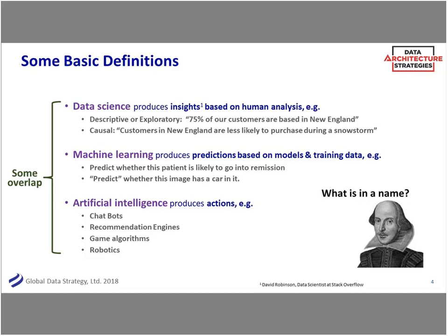I would put data science in a different category — it's more exploratory analysis, like: 75% of our customers are based in New England and are less likely to purchase during a snowstorm. Machine learning is about actually learning and building predictive models on training data — predicting whether there's an image, looking at image recognition, chatbots, recommendation engines. Artificial intelligence is some of the stuff that's actually doing action, like a chatbot or robotics.